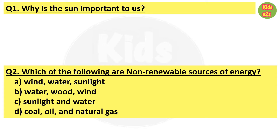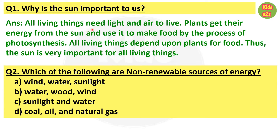Answer: All living things need light and air to live. Plants get their energy from the sun and use it to make food by the process of photosynthesis. All living things depend upon plants for food. Thus, the sun is very important for all living things.